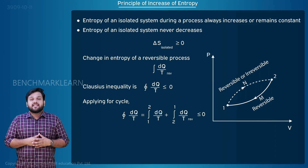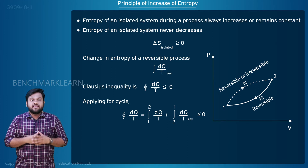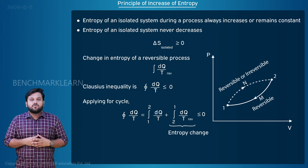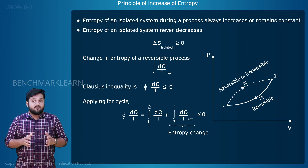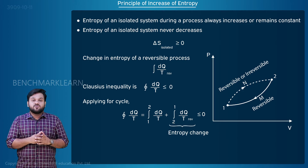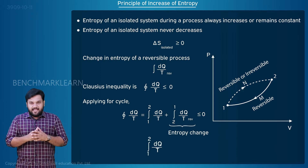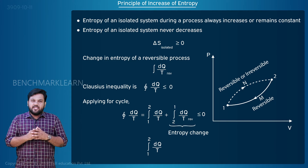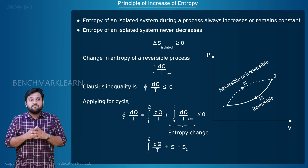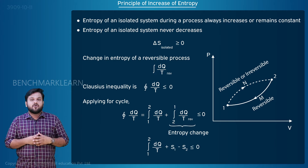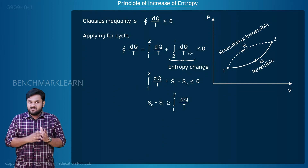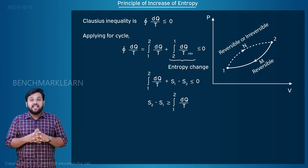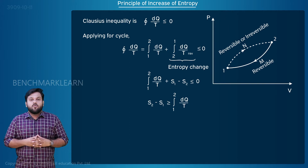We know that the integral from 2 to 1 of dq by T for the reversible process is equal to the entropy change from state 2 to 1. Therefore, it is replaced by S1 minus S2. So the integral from 1 to 2 of dq by T, plus S1 minus S2, is less than or equal to zero. Rearranging, we get S2 minus S1 is greater than or equal to the integral from 1 to 2 of dq by T.